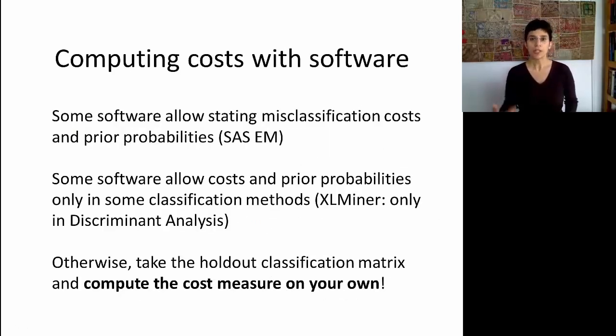Now, some software will allow you to incorporate any costs that you have, or any prior probabilities, which are these true ratios of classes in the population, directly into the software. SAS Enterprise Miner allows you to do that. XLMiner only allows you to do that in a particular procedure called discriminant analysis. However, whether the software includes it or not should not keep you from computing or taking those costs and prior probabilities into account. You've seen that it's not too difficult to integrate these costs into the cost measure. And you should always do that in order to evaluate performance when you have costs, or when you have a sample that is not representative of your population.